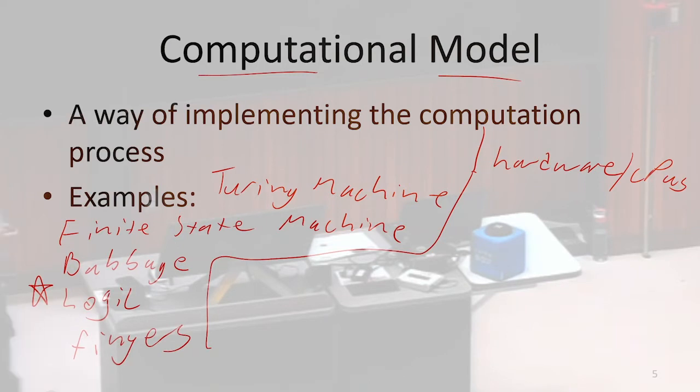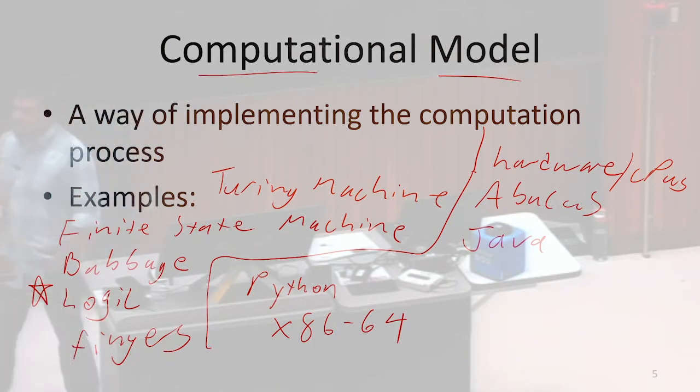An abacus. What else? So how about this? Java. Java is a model of computation. That is a way that I can actualize a process. Java code is one potential model of computation. Python is another. Or x86-64 might be another. That's machine code. The type of code that your computer most natively speaks.